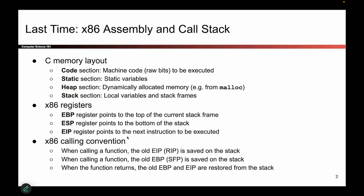We talked about what it looks like to call a function and return from a function. The really important thing you have to know for today is that when you call a function and want to change registers — like the instruction pointer or the base pointer at the top of the stack — you need to put the old values on the stack first. And when the function returns, you take those old values and copy them back into the EBP and EIP registers.